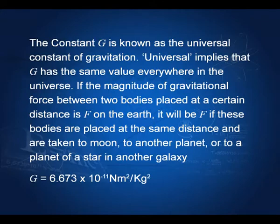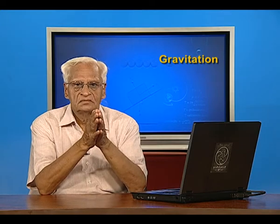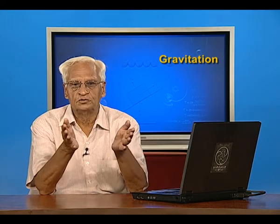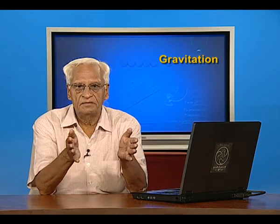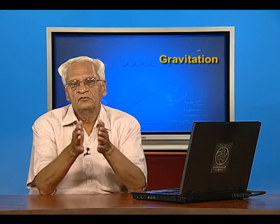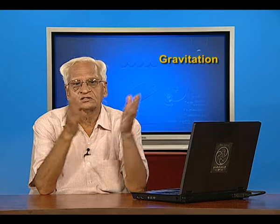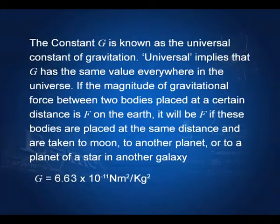Why is G called universal? It is universal because wherever you go, this constant has the same value. That means the force between two particles remains the same whether we are on the earth, on some other planet, or on some other star. That is why it is called the universal constant of gravitation. Its value is 6.63 × 10⁻¹¹ N·m²/kg².